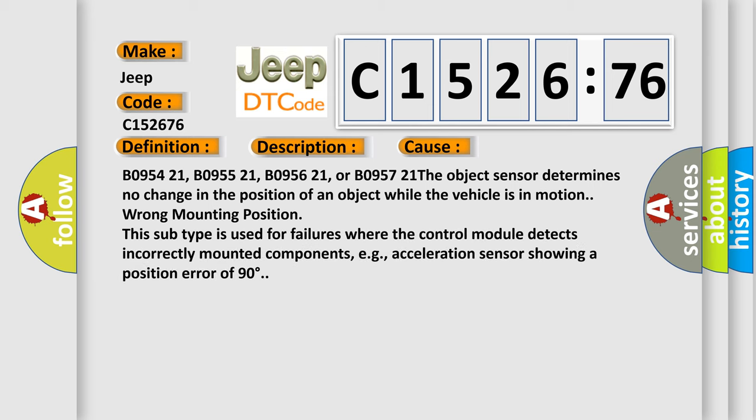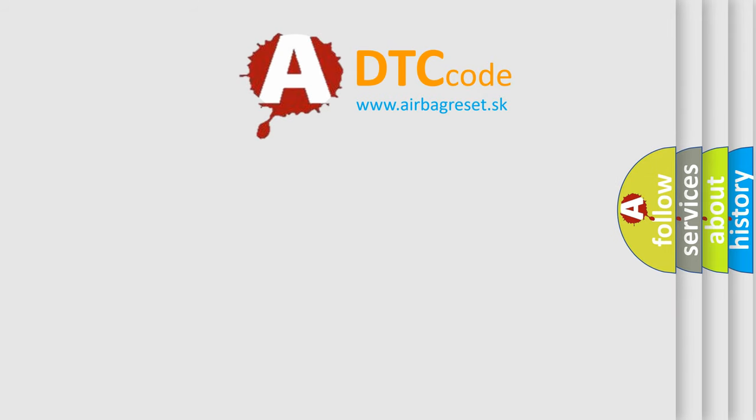This diagnostic error occurs most often in these cases: B095421, B095521, B095621, or B095721. The object sensor determines no change in the position of an object while the vehicle is in motion, wrong mounting position. This subtype is used for failures where the control module detects incorrectly mounted components, e.g., acceleration sensor showing a position error of 90 degrees.